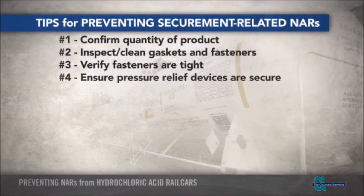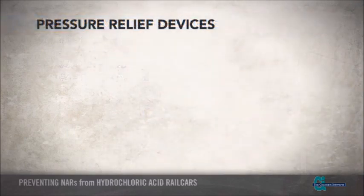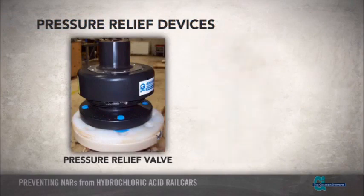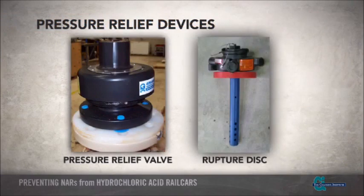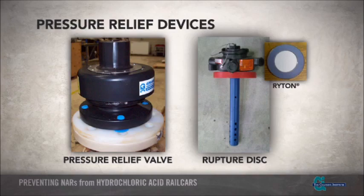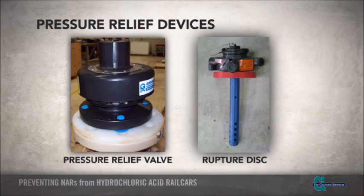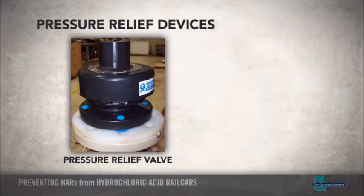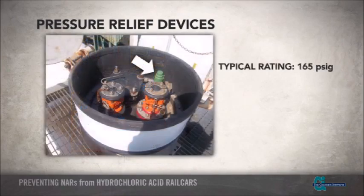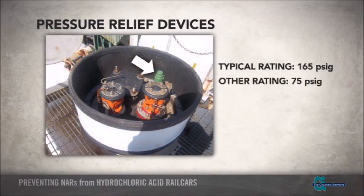It is important to ensure that the tank car's pressure relief device is closed and properly secured. Either of two types of relief devices may be installed in the rail car: a pressure relief valve or a rupture disc. Two types of rupture discs are acceptable for use in hydrochloric acid service. An example of a polyphenylene sulfide, such as a Riton rupture disc with optional Teflon lining, is shown on the top. An example of a graphite rupture disc, which is lined on the bottom side with Viton and coated with green Teflon, is shown on the bottom. Pressure relief devices on hydrochloric acid tank cars are typically rated at 165 PSIG, but some cars may have devices rated at 75 PSIG.